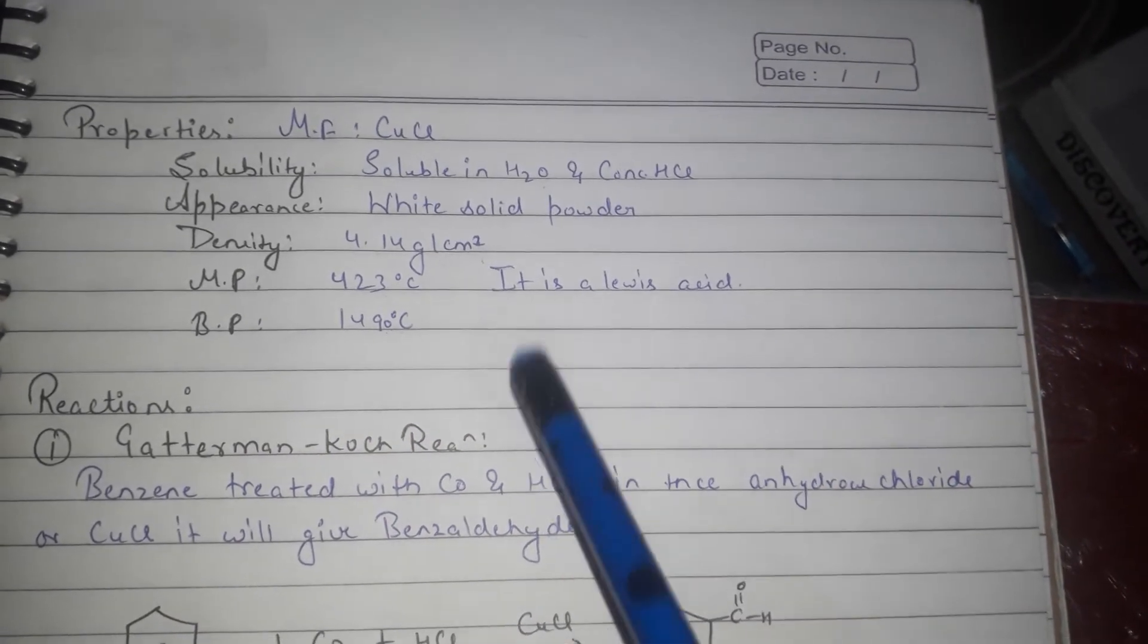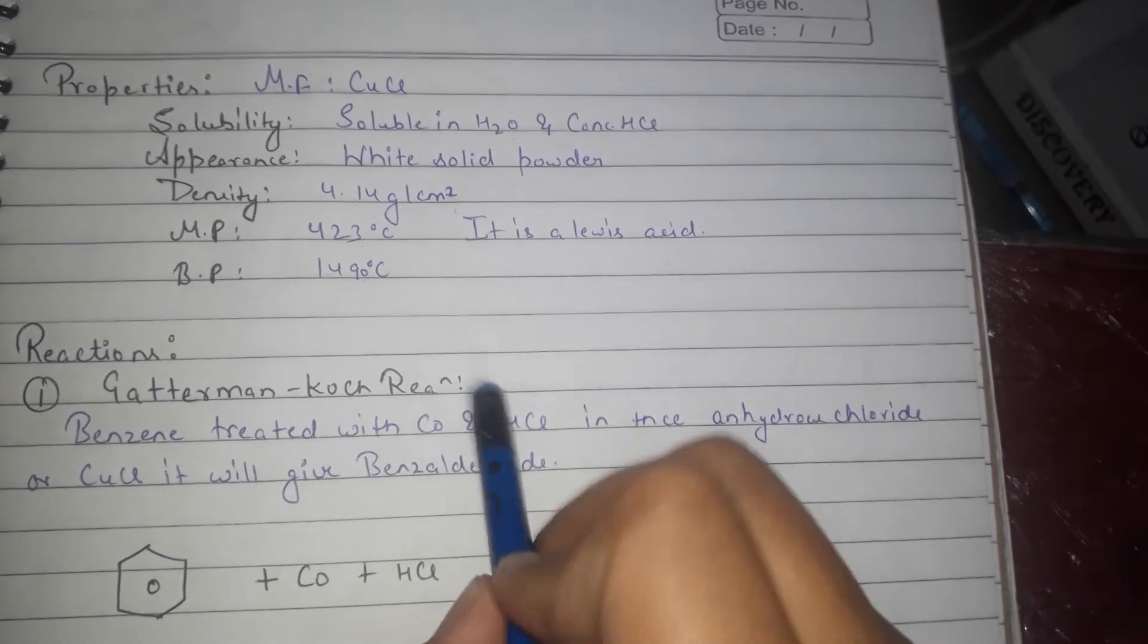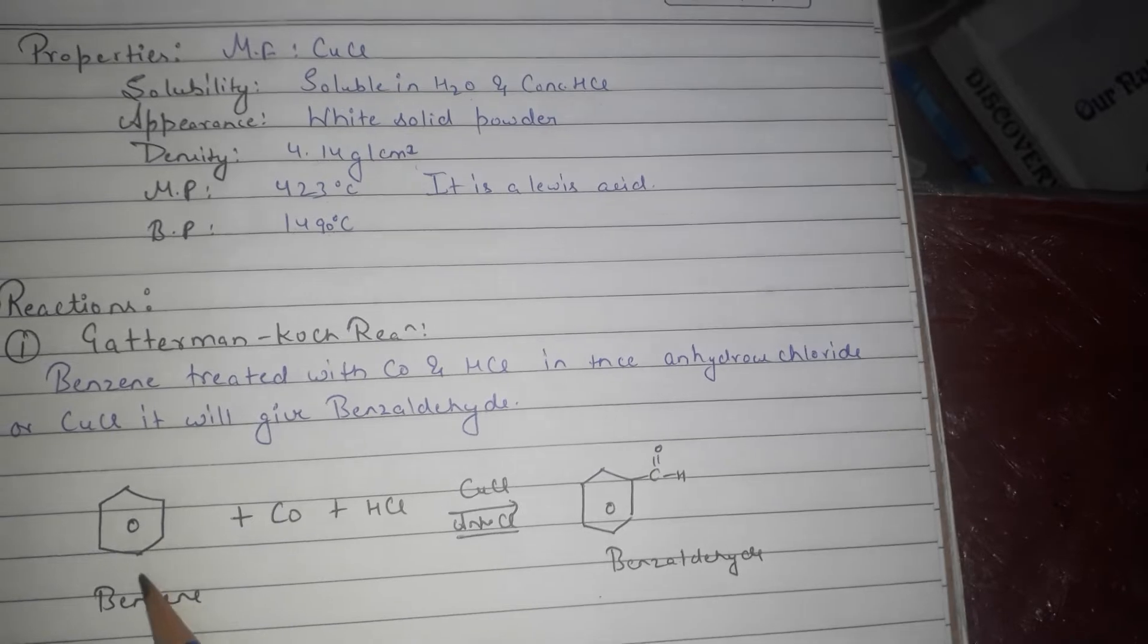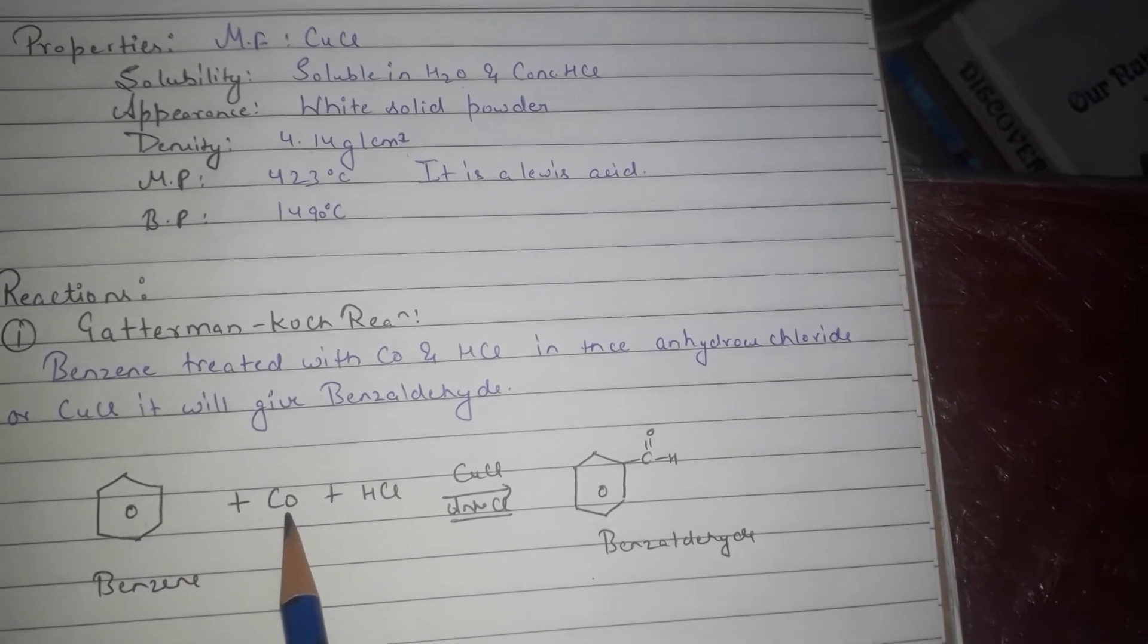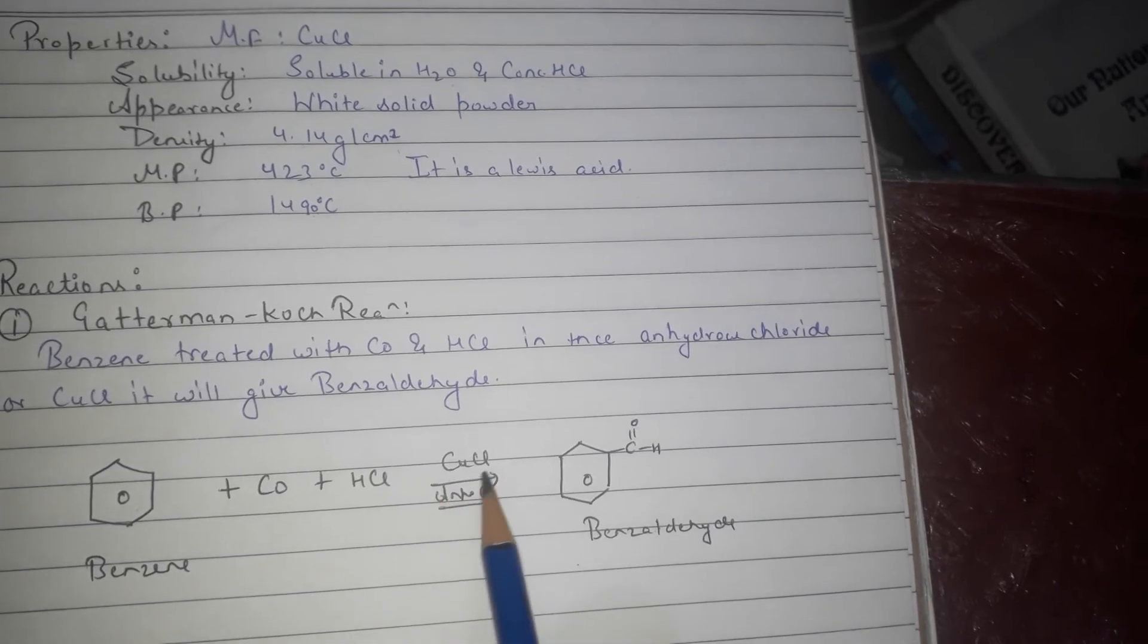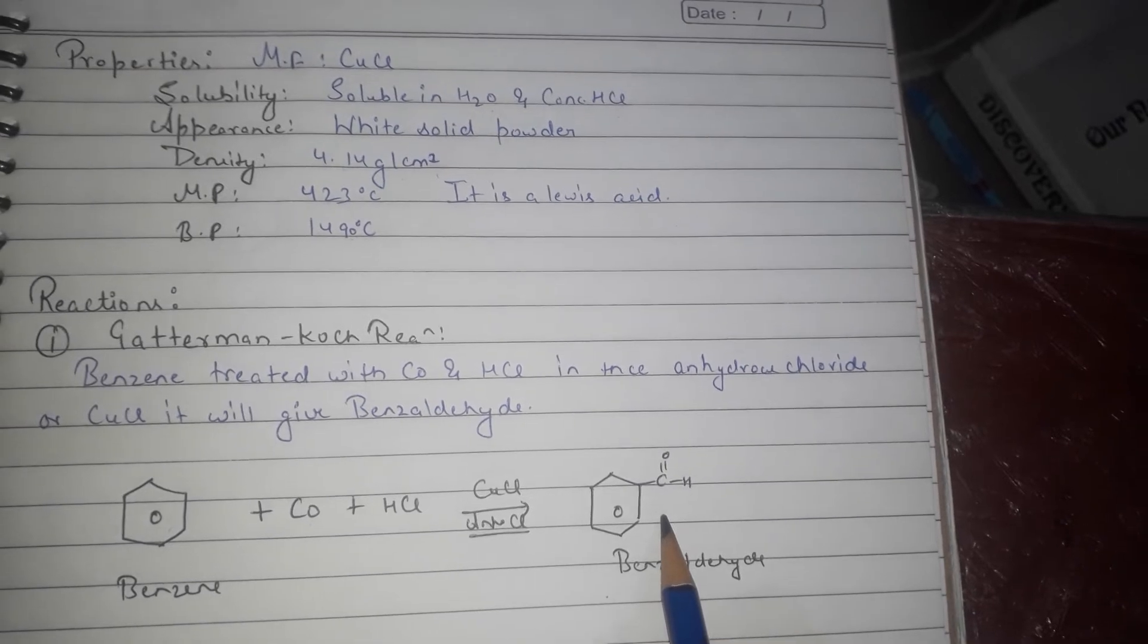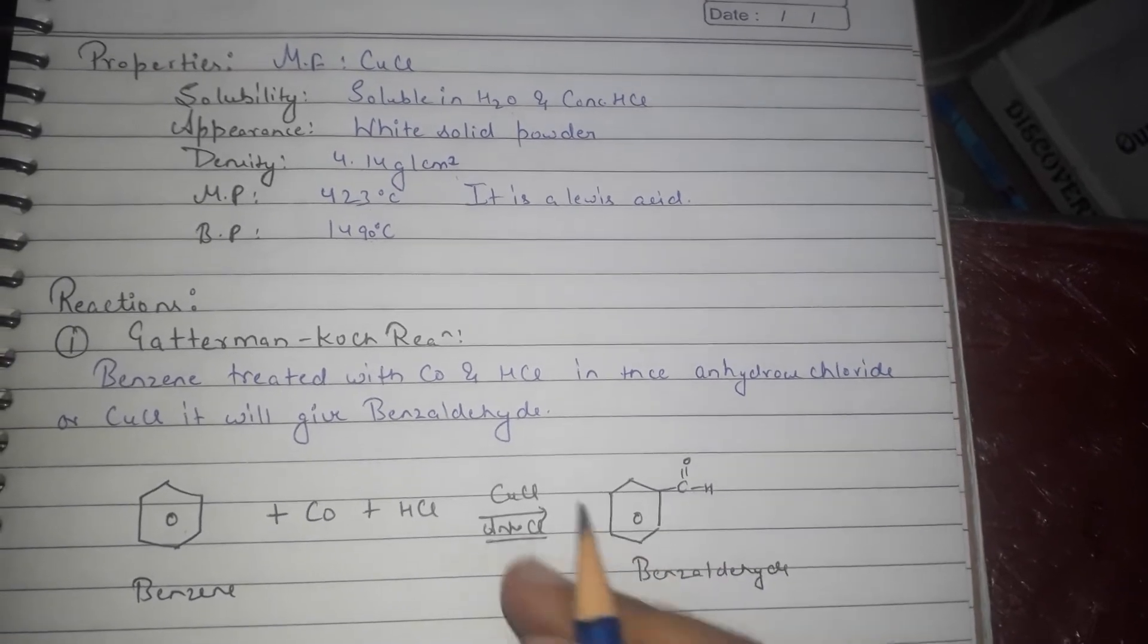Now the reactions of cuprous chloride. First, cuprous chloride is used in Gattermann-Koch reaction. Here benzene is treated with CO, carbon monoxide, plus HCl in presence of CuCl and anhydrous AlCl3. It will give benzaldehyde, CHO on benzene ring.